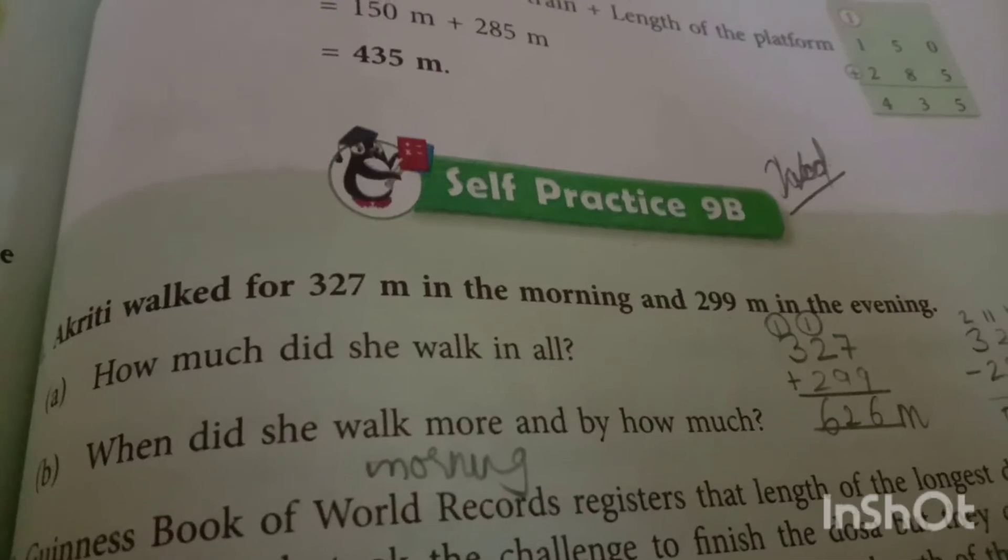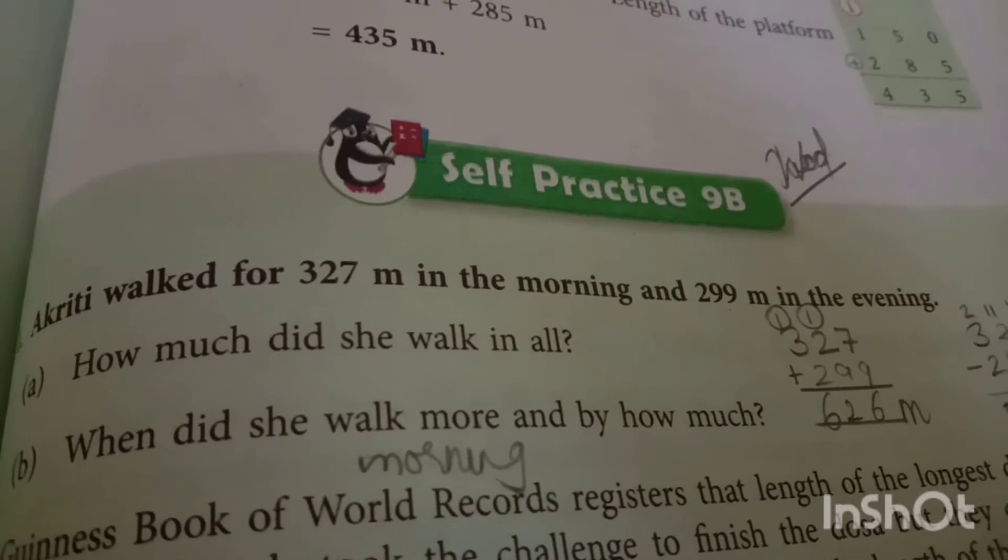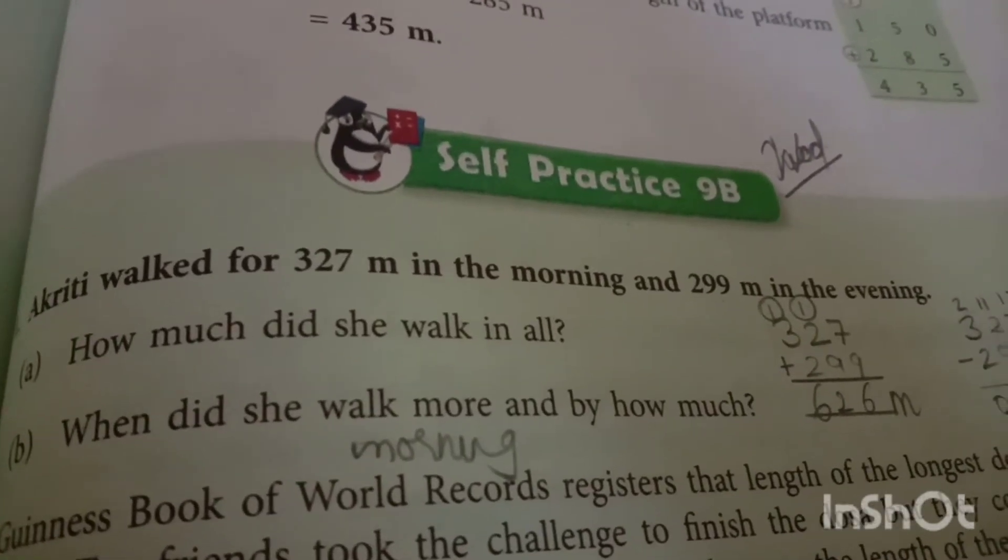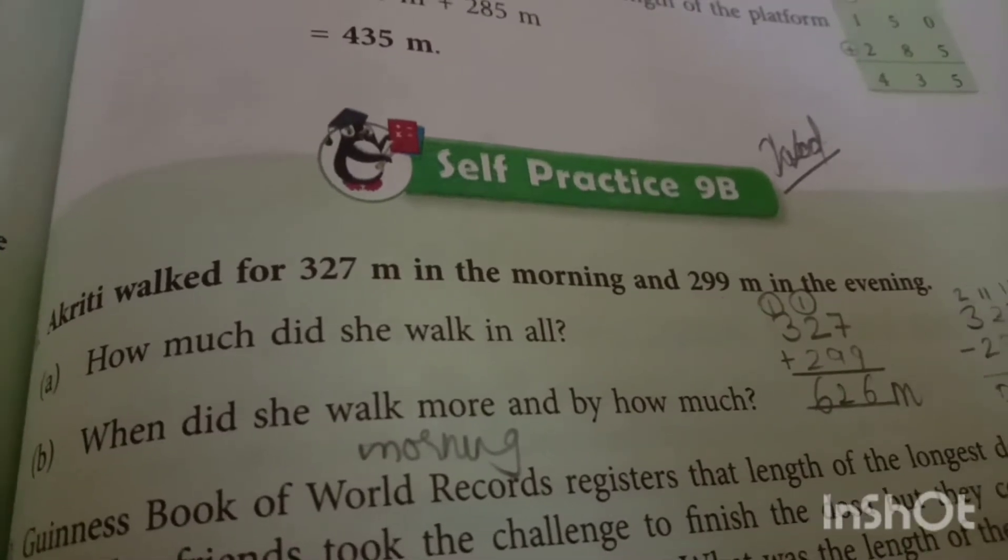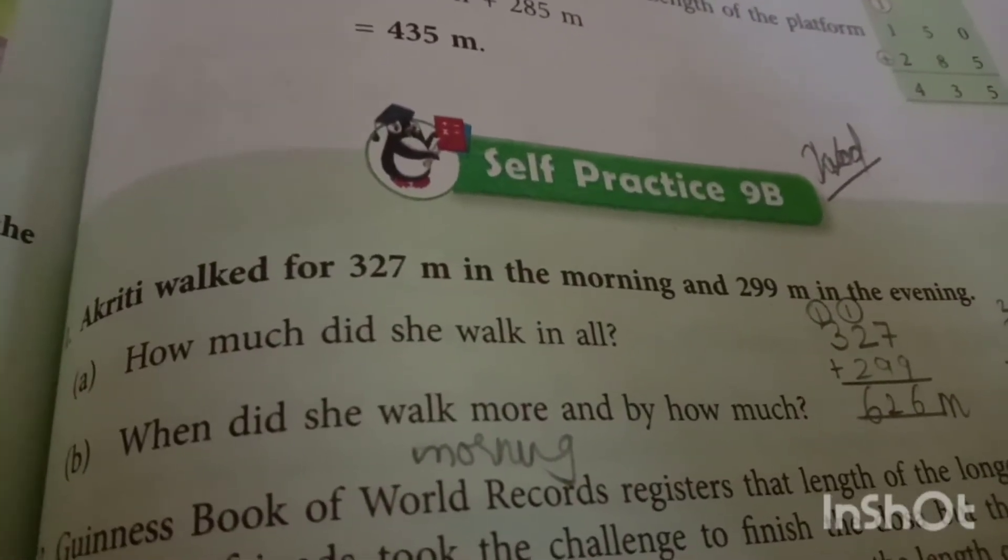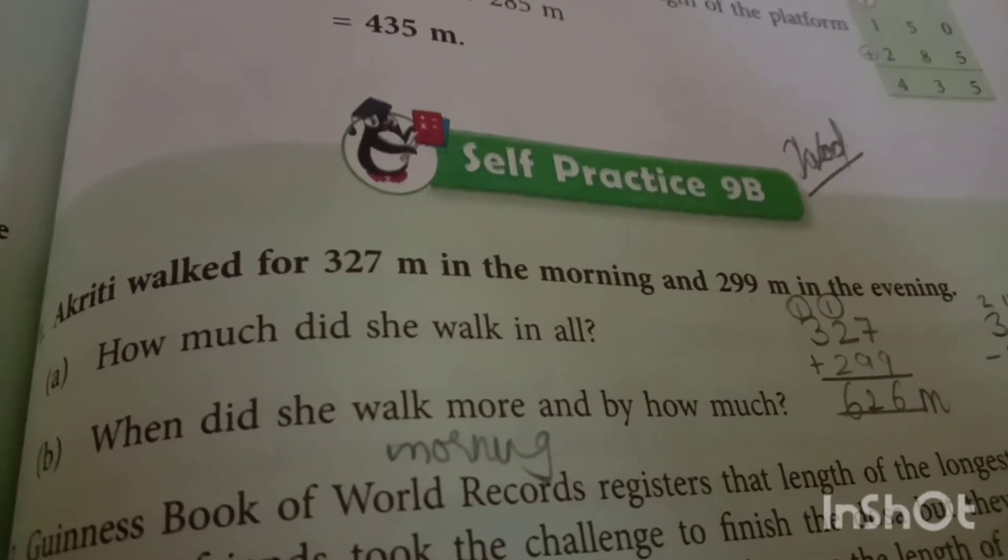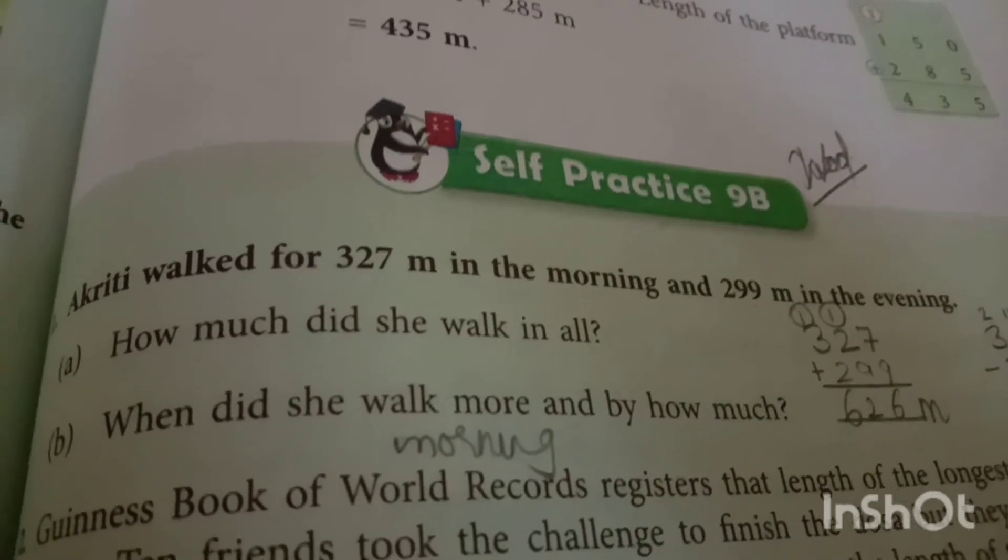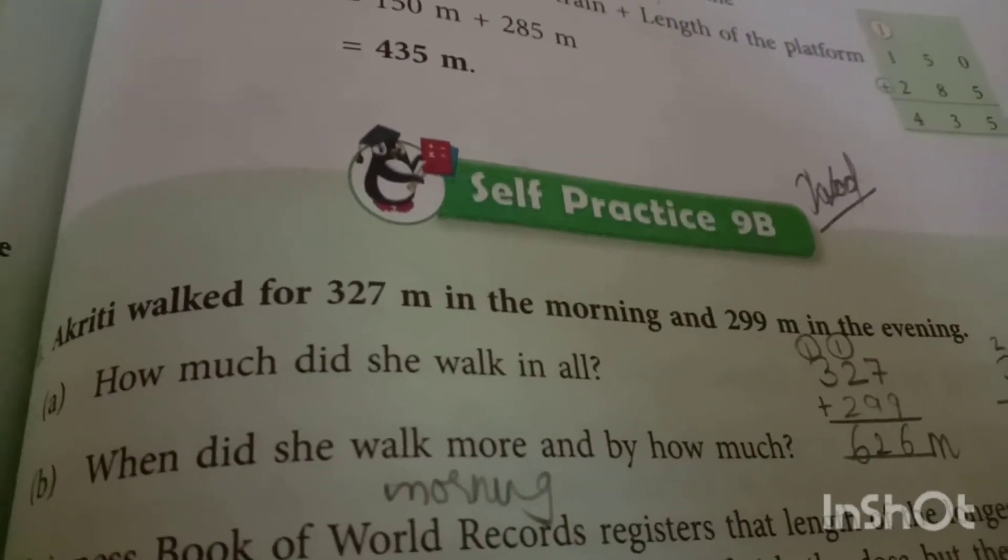Exercise 9B, we are going to solve question number one. I will read then explain on the blackboard. Akriti walked for 327 meters in the morning and 299 meters in the evening. Question A: How much did she walk in all? Question B: When did she walk more and by how much?